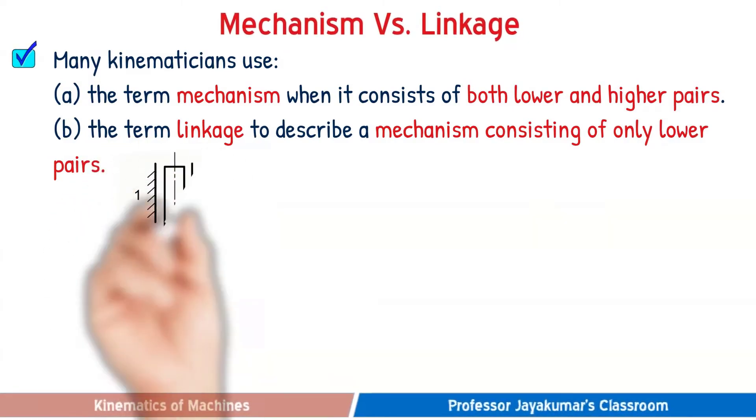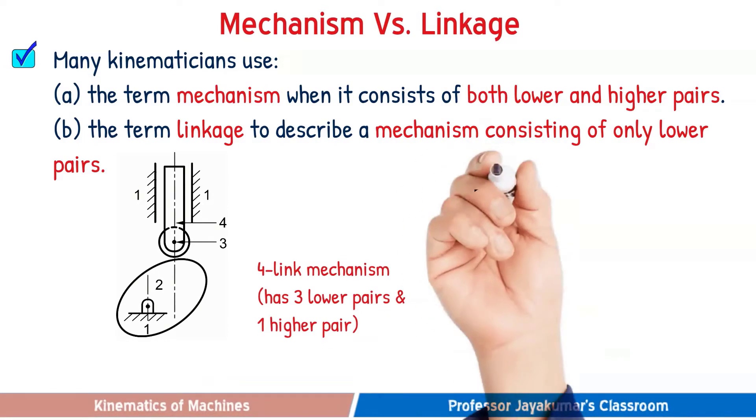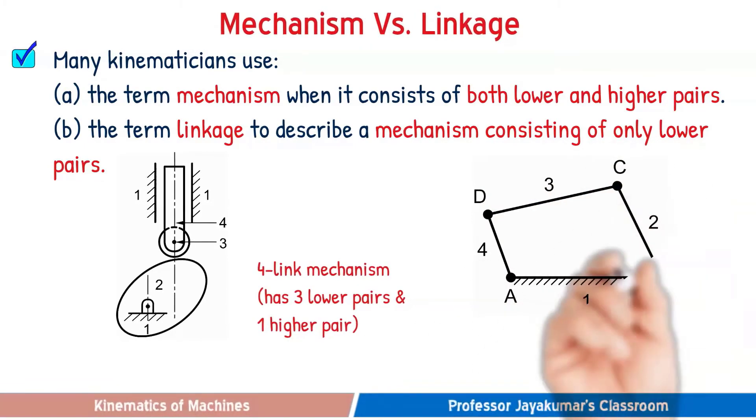Consider this cam follower mechanism, which is a four link mechanism which has three lower pairs and one higher pair. So, they prefer it to be called as mechanism. Whereas in the second diagram, it is a four bar linkage because it has all lower pairs and hence they prefer it to call as linkage rather than mechanism.